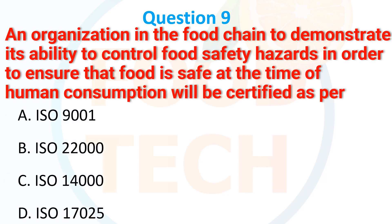Question 8: Food for human consumption will be certified as per — a. ISO 9001. b. ISO 22000. c. ISO 20000. d. ISO 17025. The correct answer is ISO 22000.